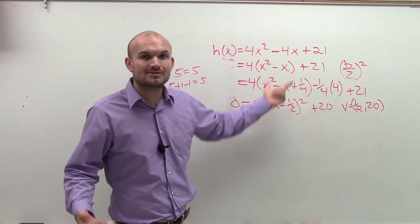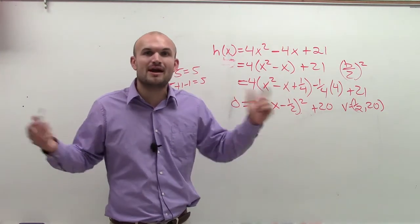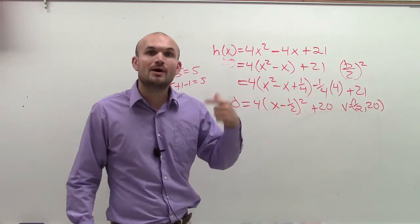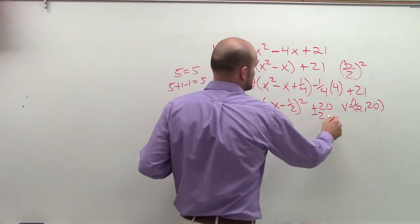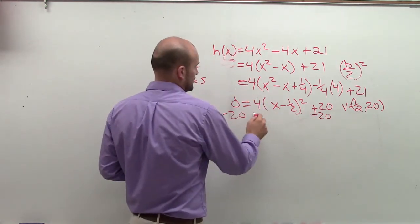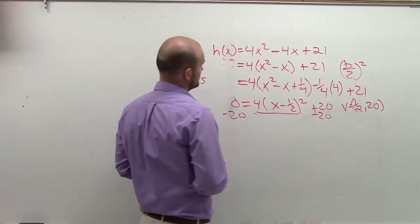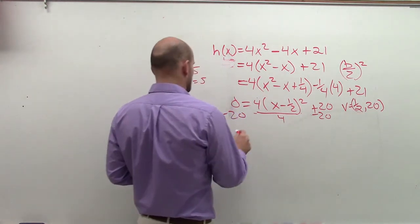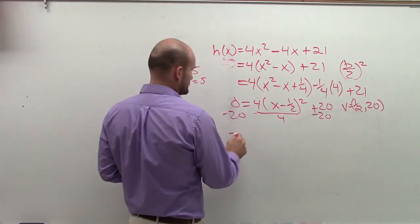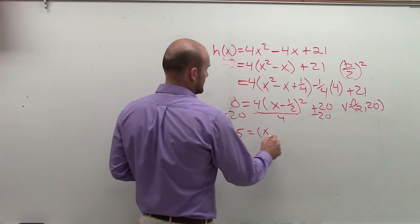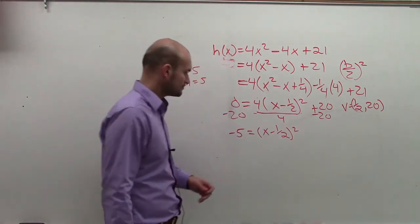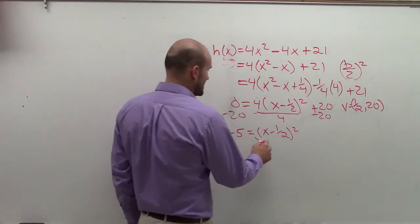What I want to do is isolate now this variable. Well, remember when we had two variables, you can't isolate two of them because you have more than one. But now that we have one, we can isolate it. So I subtract 20, divide by 4. So negative 20 divided by 4 is negative 5 equals x minus 1/2 squared.